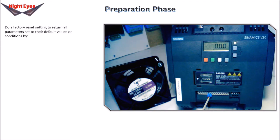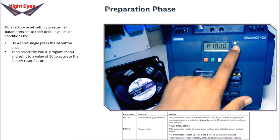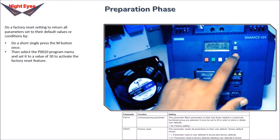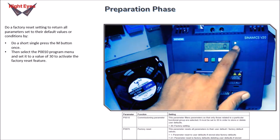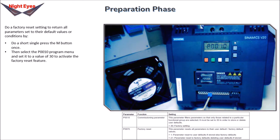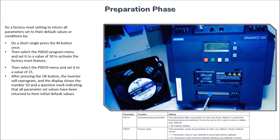Do a factory reset to return all parameters to their default values. Do a short single press of the M button, then select the P0010 menu and set it to a value of 30 to activate the factory reset feature. Then select the P0970 menu and set it to a value of 21. After pressing OK, the inverter will reprogram and the display shows '50' with a question mark, indicating all parameter values have been returned to their initial default values.